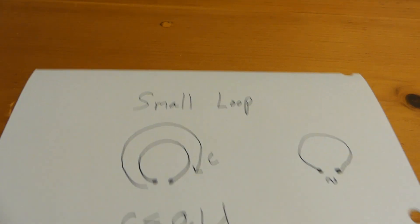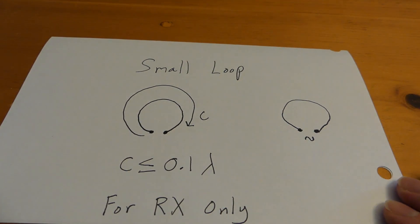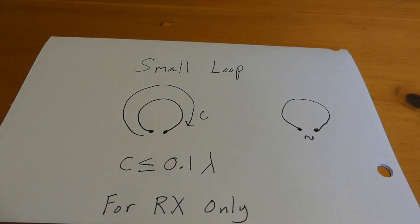So, what is a small loop? Well, by definition it's obviously a loop of wire and the circumference or length of the wire has to be less than or equal to 10% of the wavelength. Now, this doesn't have to be a hard 10%. If it's 15, 20%, it's pretty much going to work.